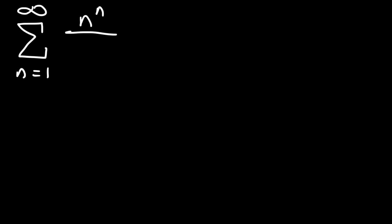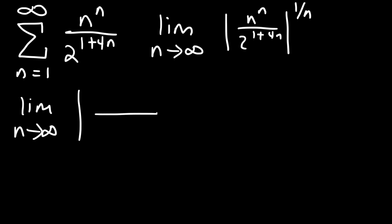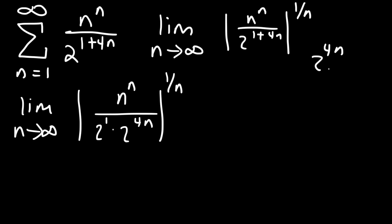Now let's move on to our fourth example: n raised to the n divided by 2 raised to the 1 plus 4n. Before applying the root test, let's simplify a sub n. We write 2 to the 1 plus 4n as 2 to the 1 times 2 to the 4n. Now 2 to the 4n equals 2 to the 4 raised to the n, and 2 to the fourth is 16, so the denominator becomes 2 times 16 to the n.